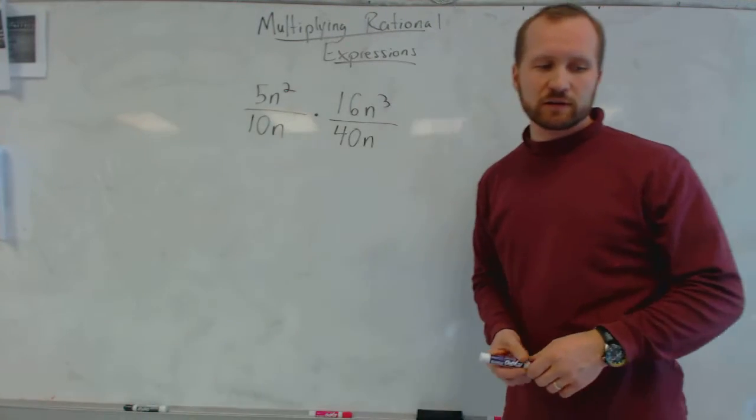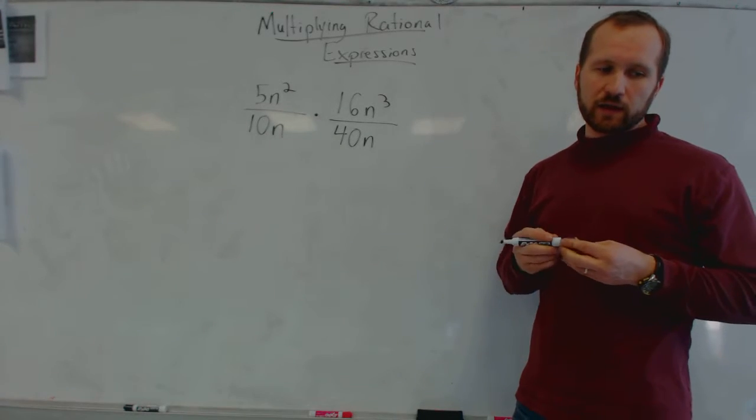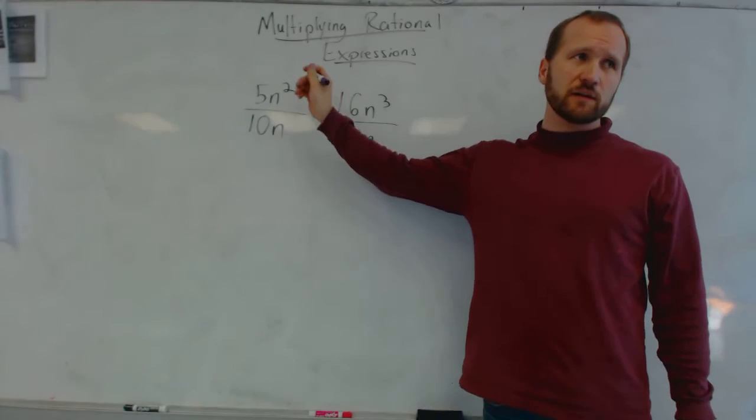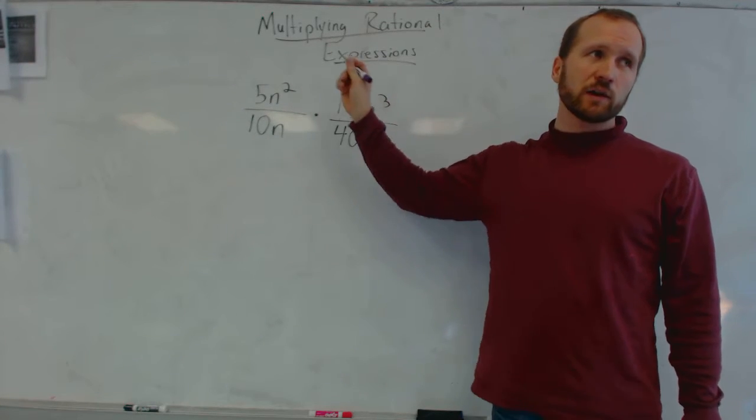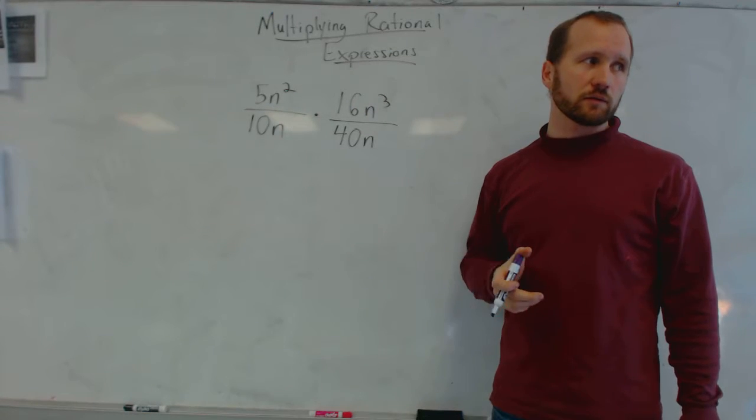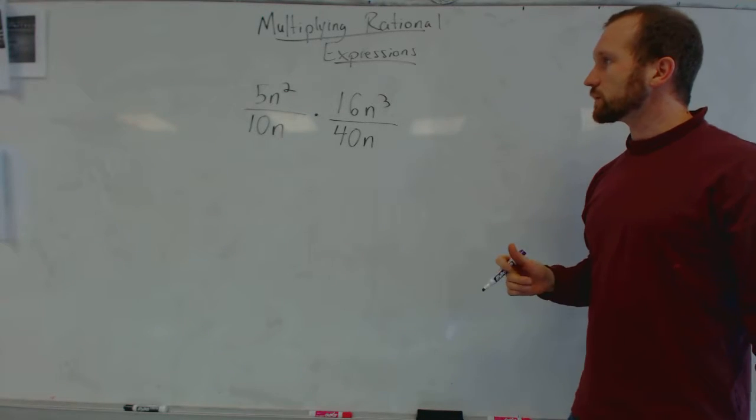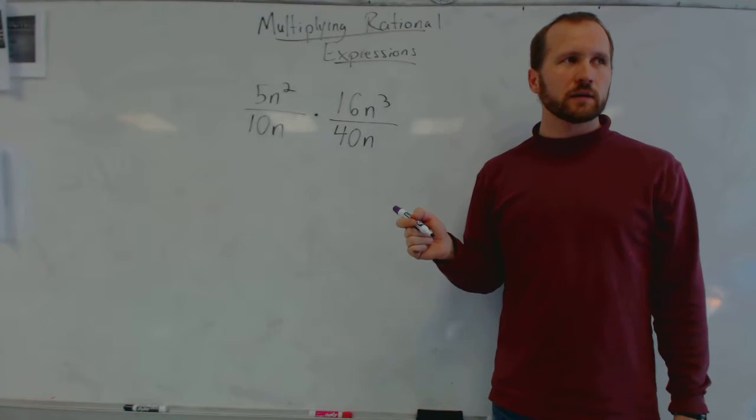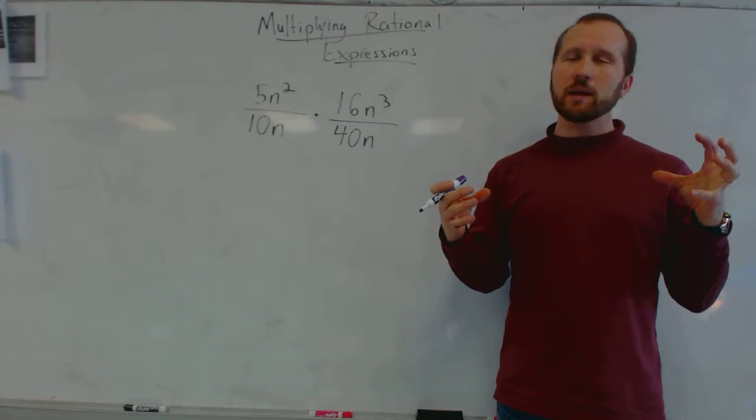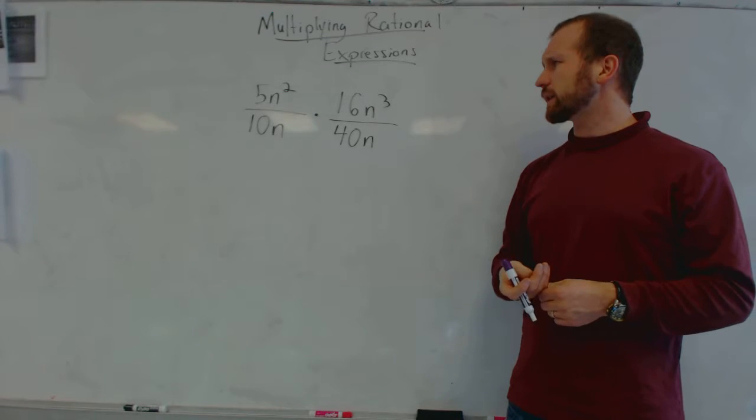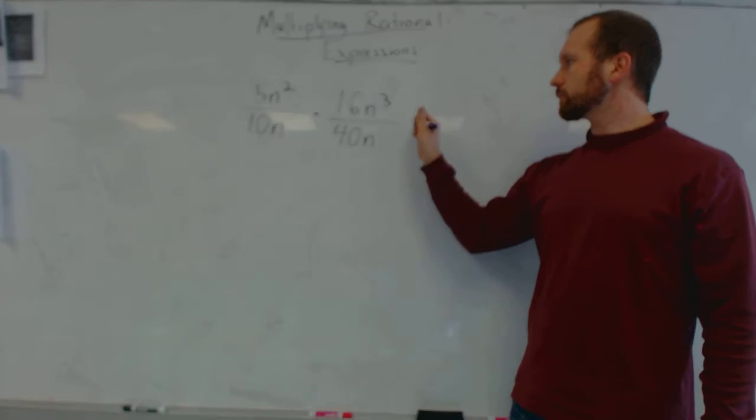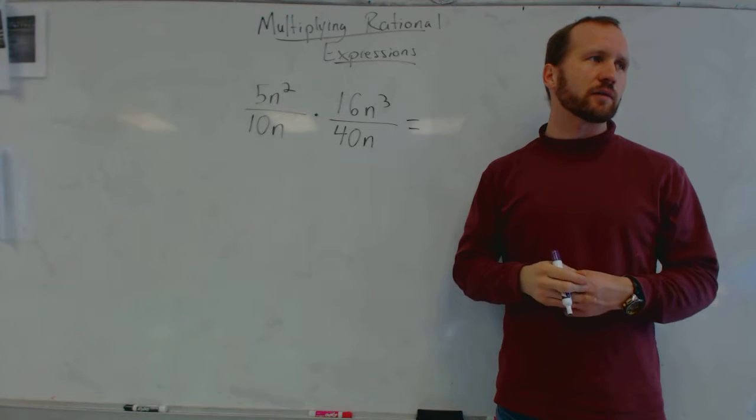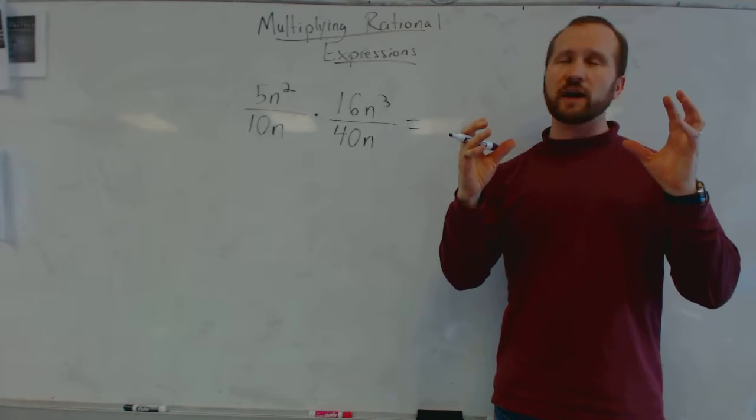All right, multiplying rational expressions. So we're going to look at a couple different types of rational expressions. The first one is if we just have one term in the numerator and denominator of each fraction. Something like this. And you already know how to do this, but it's just a little bit more complicated because we now have variables. But eventually we'll also have two term factors.